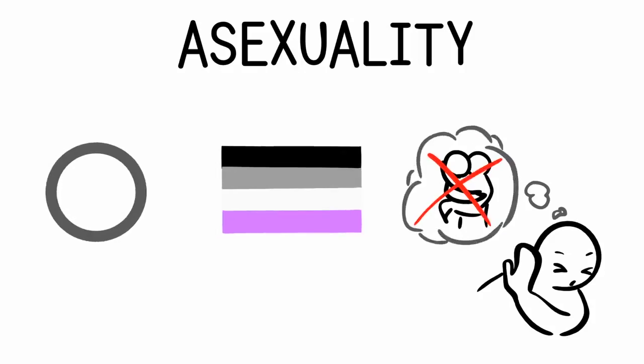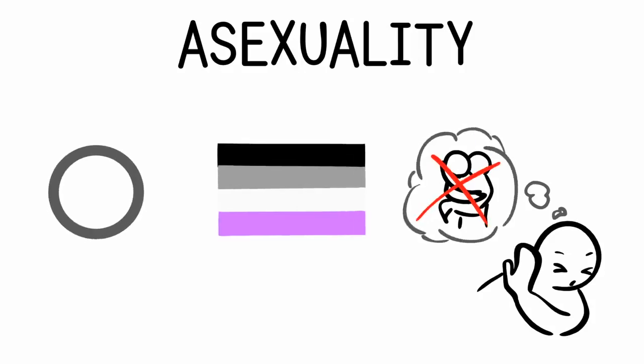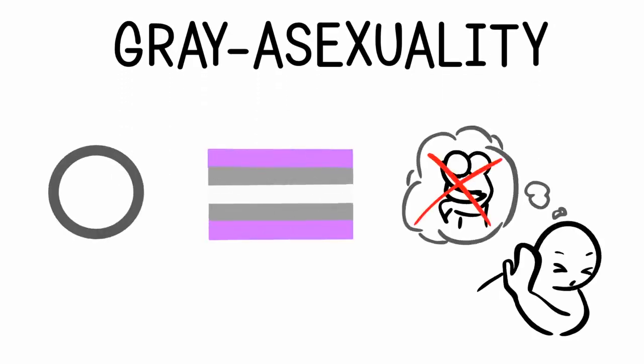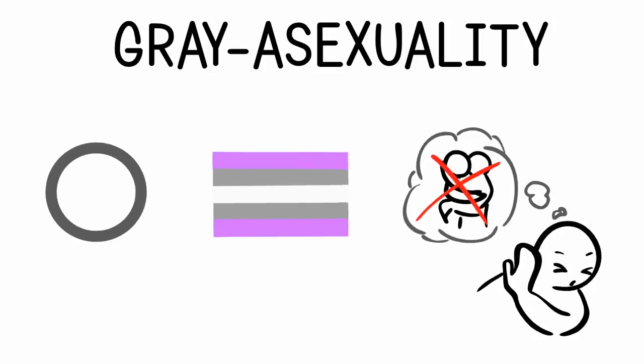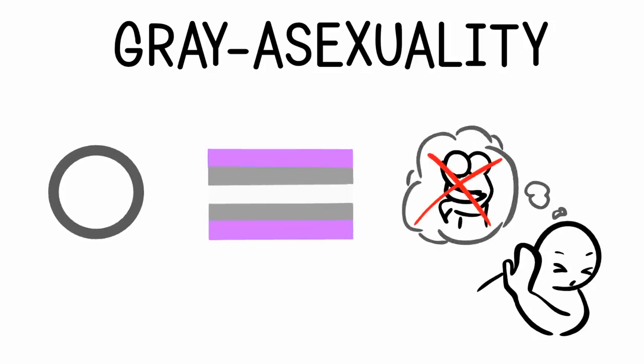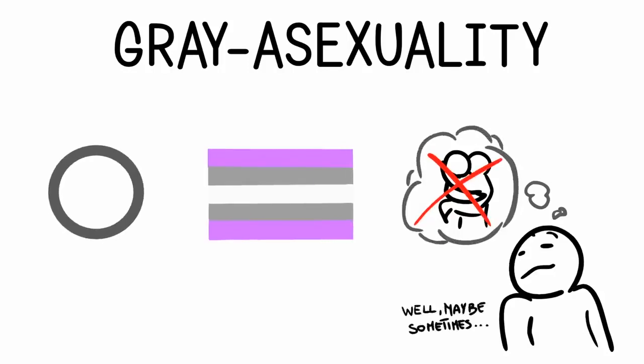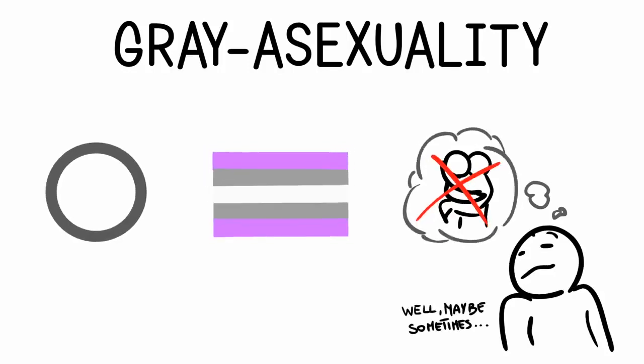The TV show Bojack Horseman explores asexuality through one of its major characters, Todd Chavez. Seven: gray asexuality. This is similar to asexuality; however, instead of never experiencing sexual attraction, someone who is graysexual may very rarely experience sexual attraction. They are still valid under the asexuality umbrella despite occasionally experiencing sexual attraction.